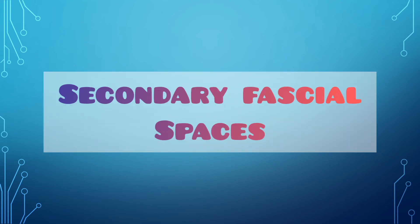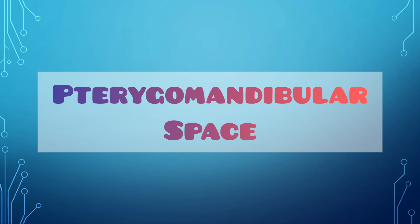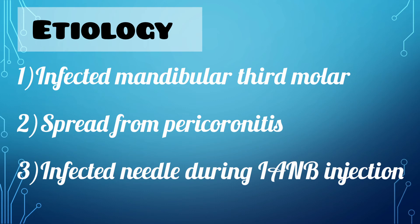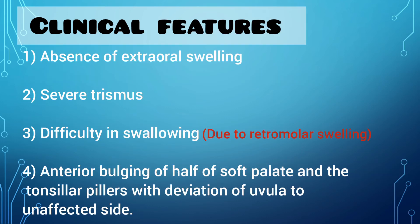Next we go to the secondary potential facial spaces, which include the temporal space, parotid space, pterygomandibular space, etc. The pterygomandibular space is the most important secondary facial space. Infection here is commonly due to an infected mandibular third molar, spread from pericoronitis, or an infected needle during the IANB technique. Clinical features include severe trismus, difficulty in swallowing, anterior bulging of half of the soft palate and the tonsillar pillars with deviation of the uvula to the unaffected side. Importantly, there is absence of extraoral swelling.